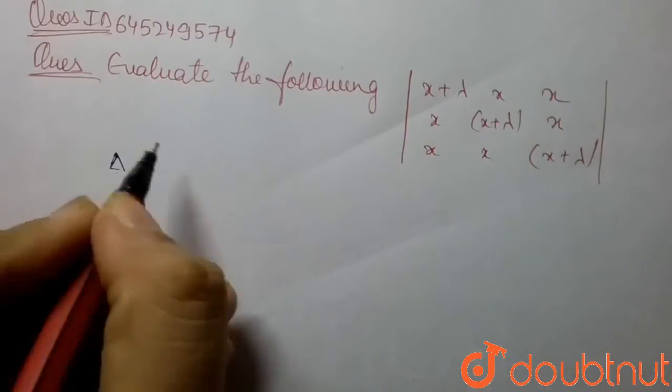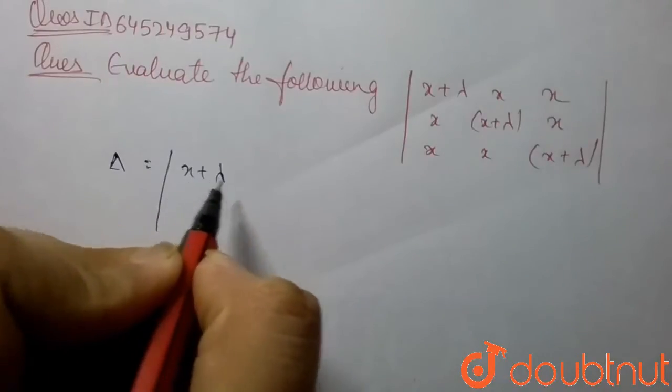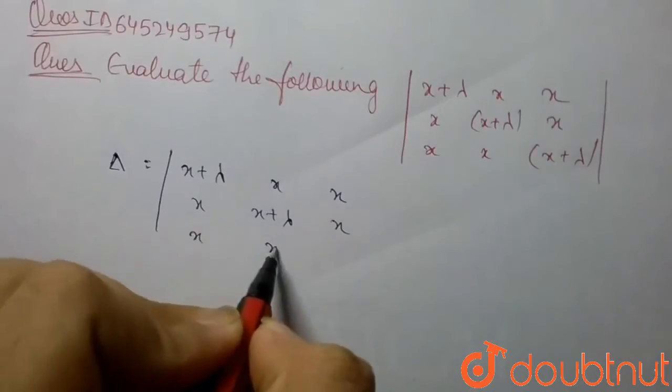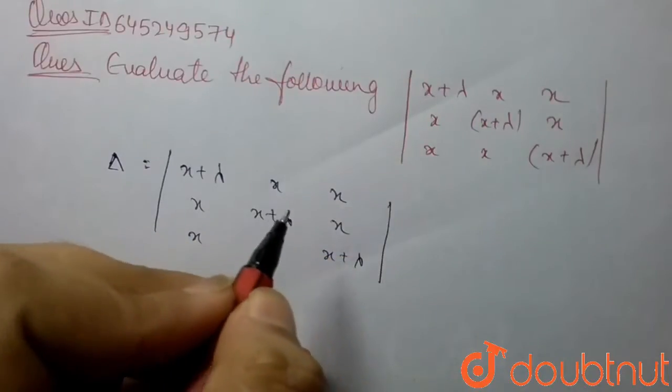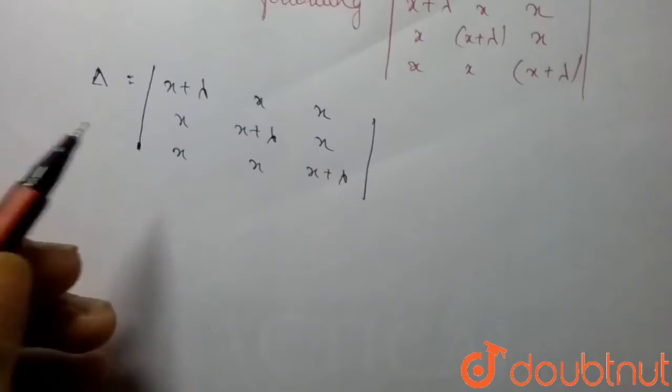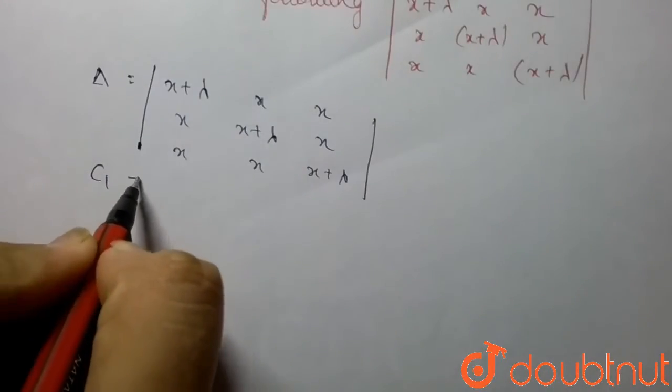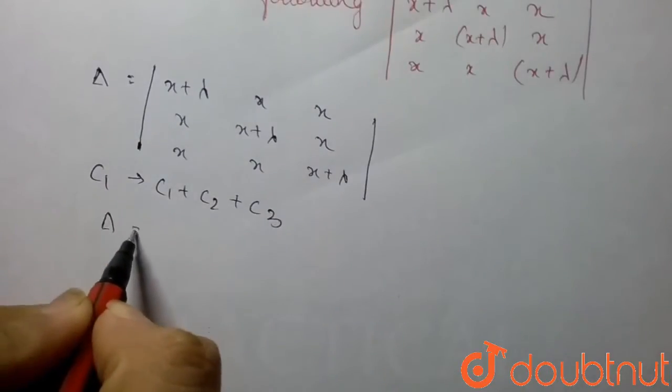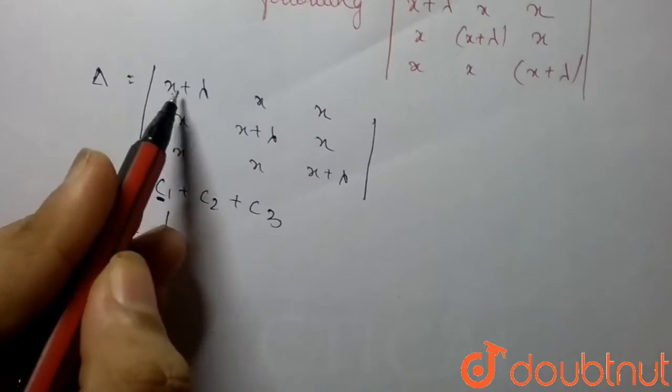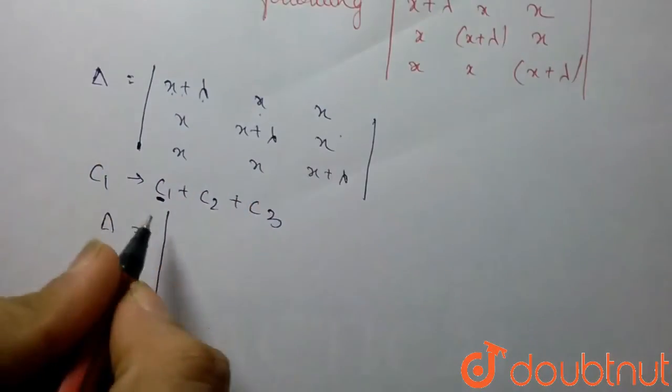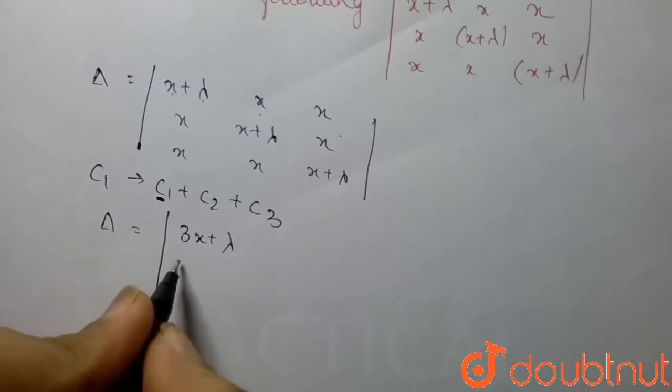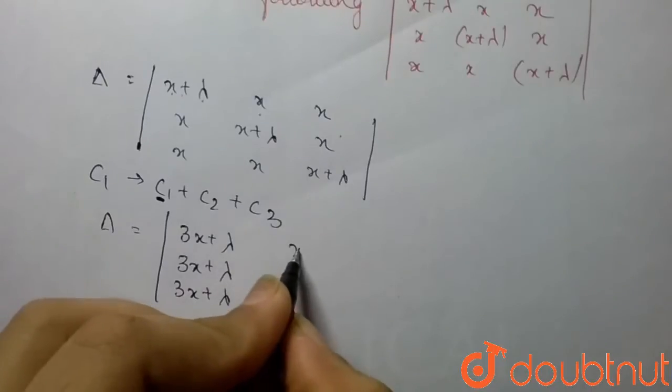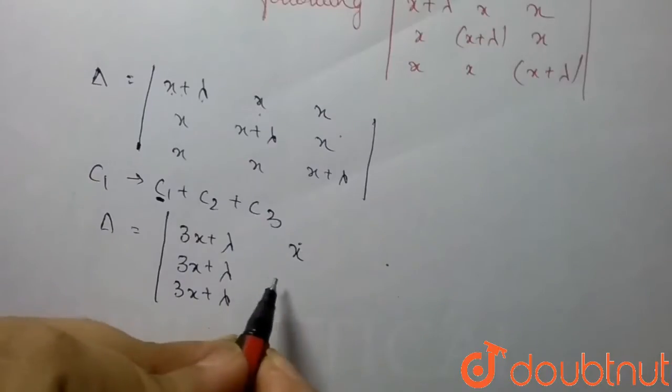Let the value of the determinant be Δ. For solving this determinant, we can apply some changes. At first, C1 = C1 + C2 + C3. So we get the value of C1 is x+λ + x + x, which becomes 3x+λ. All three entries in the first column become 3x+λ, and the second and third columns remain the same.